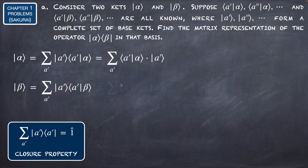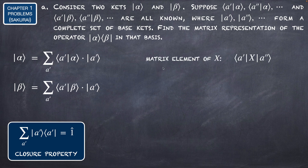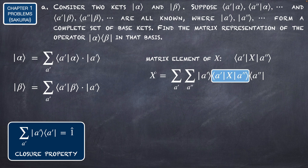Here we can explicitly see the coefficients multiplying each eigenket. The matrix element of a certain matrix X is this product of the bra, the operator, and the ket. We can write X by introducing the closure property twice — one summation over a-prime and the other over a-two-prime. We can see the product ⟨a-prime| and |a-prime⟩ here, and ⟨a-two-prime| and |a-two-prime⟩ there. The term highlighted in blue is exactly the matrix element of X, which is the matrix in this representation.